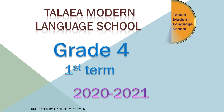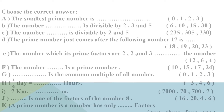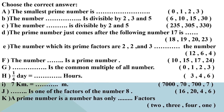Welcome, grade 4. Choose the correct answer. Letter A: the smallest prime number is 0, 1, 2, or 3? Yes, the smallest prime number is 2. A prime number is a number that has only 2 factors.